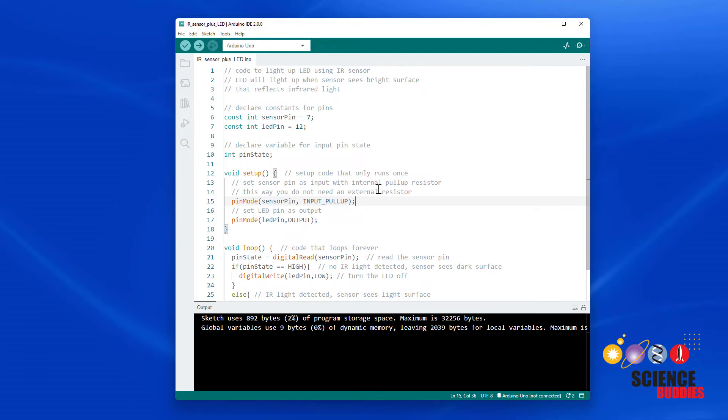The purpose of that resistor is to always give this pin a default value of high or 5 volts unless the sensor activates in which case it's going to pull that value down low to 0 volts. So if you go back to the button video earlier in this series we used an external resistor for this purpose. Using the internal resistor with the Arduino just makes your circuit a little cleaner because it requires one less part.